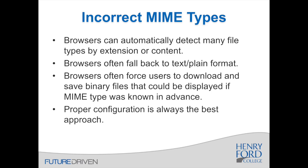No matter what, proper configuration is always the best approach. Whenever adding a new, different file type to your web server, you might want to just make sure that it displays correctly in a browser. And if it doesn't — if it says something weird like text/plain or application/octet-stream — you can usually just do a Google search, figure out what the correct MIME type would be for your file, add it to your server's configuration. Sometimes you then have to clear the browser cache. Try again, and hopefully once you've got all that set correctly, the file will display as intended in a browser.